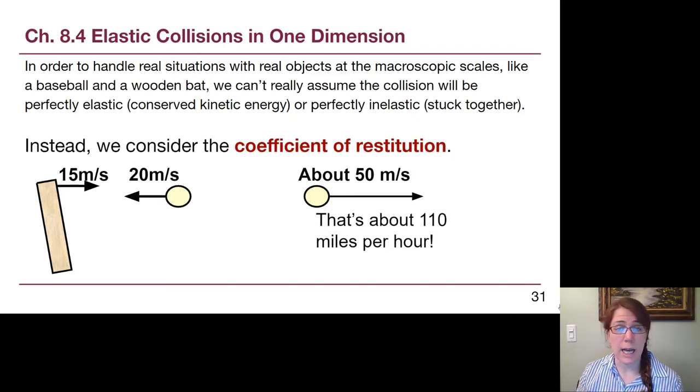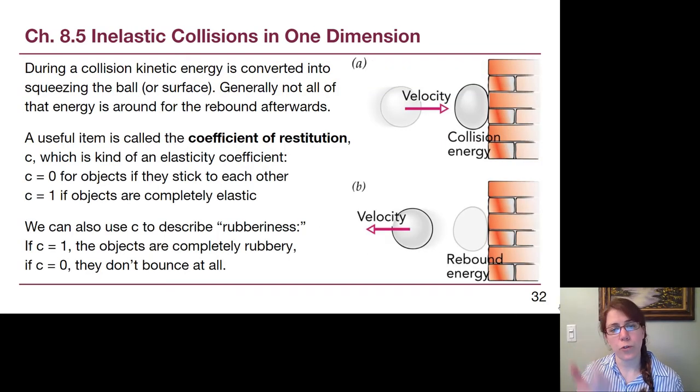And so, this is not an elastic collision, and if we want to handle real situations like a baseball and a bat, we can't assume that things are going to be perfectly elastic, but we also can't assume the other extreme, perfectly inelastic, where they're stuck together. There is a way for us to handle the in-between situations. We can consider the coefficient of restitution. So this phrase, coefficient of restitution, is a way for us to be able to think about the in-between situations. It's not perfectly elastic, but it's also not going to stick together.